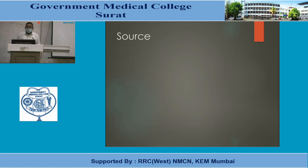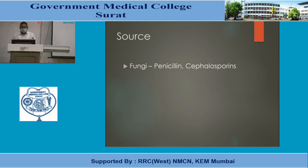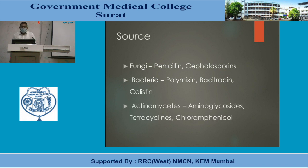Antimicrobials can also be classified by source. Drugs obtained from fungi include penicillins and cephalosporins. Certain drugs are obtained from bacteria, like polymyxin, bacitracin, and colistin. Actinomycetes are a source of aminoglycosides, tetracyclines, and chloramphenicol.